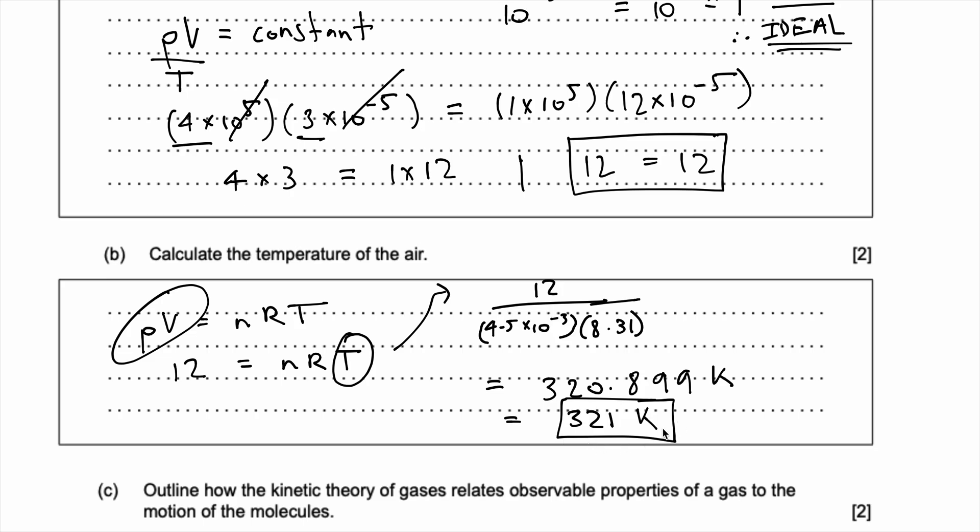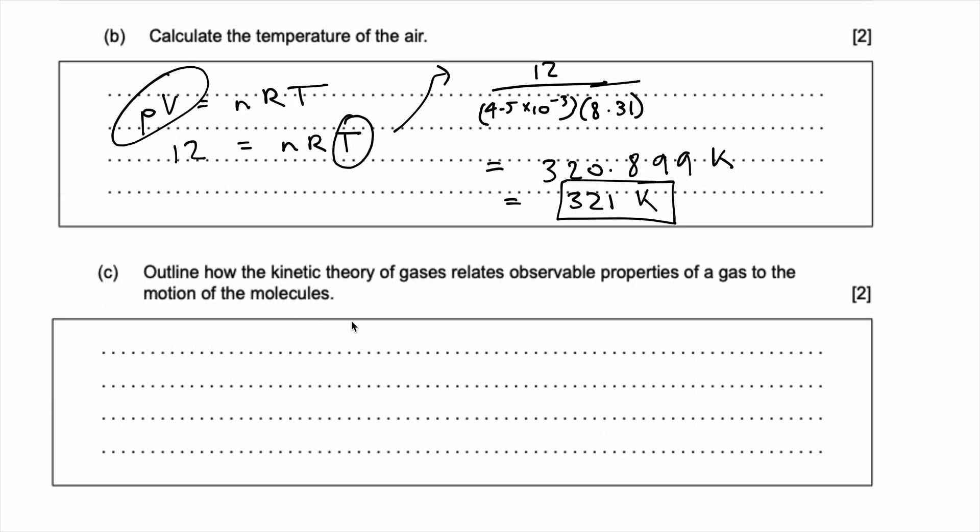And always remember, your temperatures will be in Kelvin for anything in this topic B, and usually never degrees, unless they tell you. Okay, part C, outline how the kinetic theory of gases relates the observable properties of a gas to the motions of molecules. Now, I'm not going to go over the kinetic theory of gases, but the essential idea is that, in this particular question, the absolute temperature of the gas is directly proportional to the kinetic energy of the gas molecules.